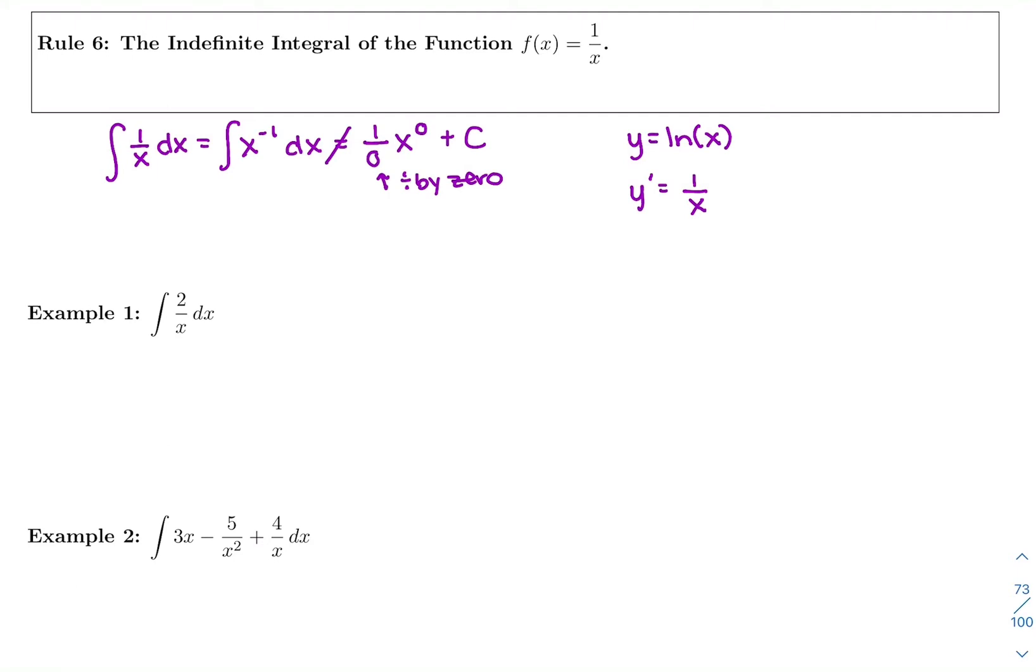This is the only power where we can't add 1 to it is when our power is negative 1. So normally, I'm on autopilot. Every fraction I see, I'm rewriting as a negative exponent, and then I'm trying to add 1 to it. And the only time I don't do that is when I add 1 and I get 0 in the denominator and as my new power. Then the antiderivative is the natural log of x.